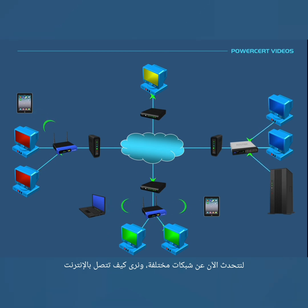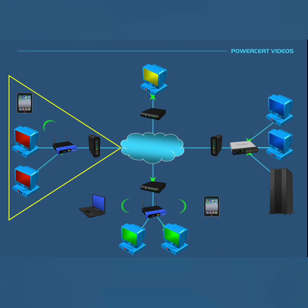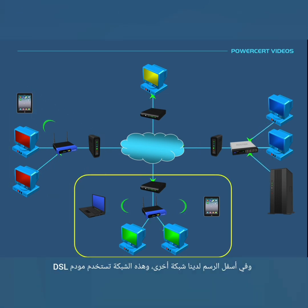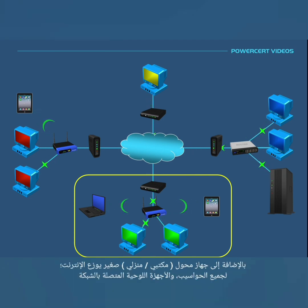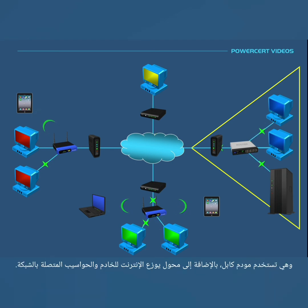So here is an example of several different networks on how they connect to the internet. This network here on the left is using a cable modem and a small office home office router so that its computers and tablet can have internet access. On the bottom we have another network using a DSL modem, also using a small office home office router so that its computers, laptop, and tablet can access the internet. The network here on the right is an example of a business network using a cable modem and a business router to connect its computers and server.